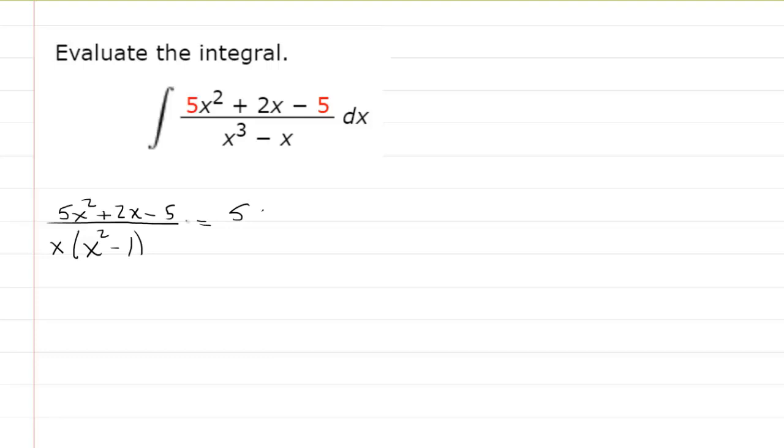And then you want to factor your denominator further if possible, and in this case we can do that because x squared minus 1 is the difference of perfect squares, so that factors as x minus 1 times x plus 1. Now look at your denominator carefully, and you have three factors, and all of them involve x raised to the power of 1.